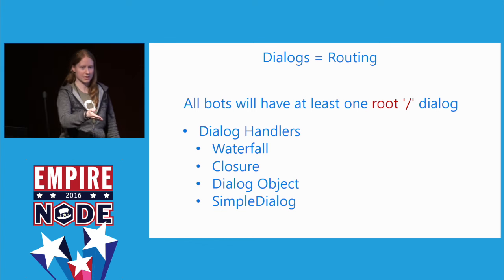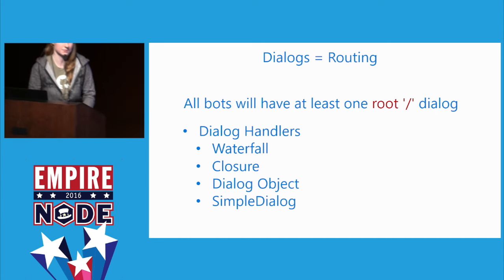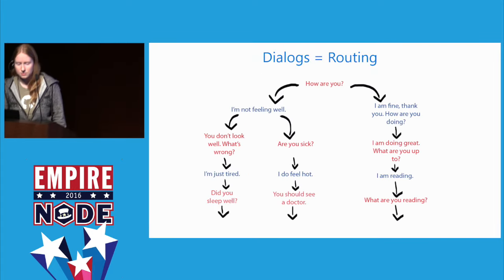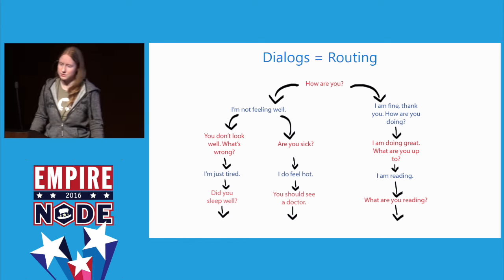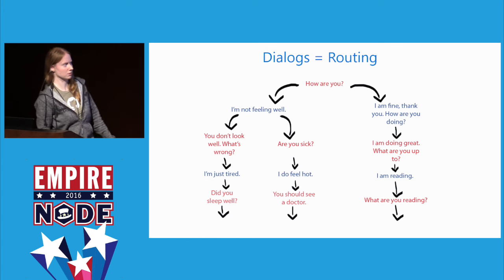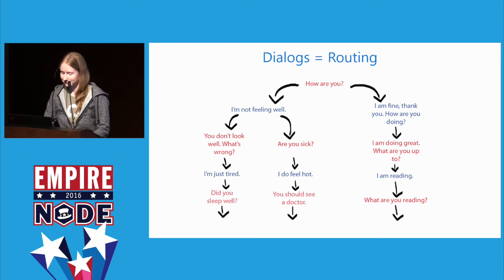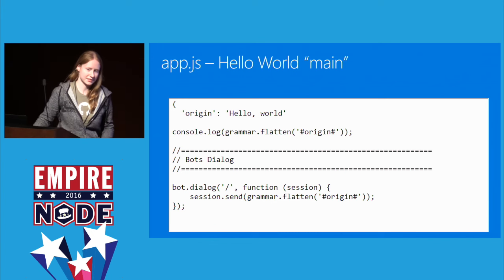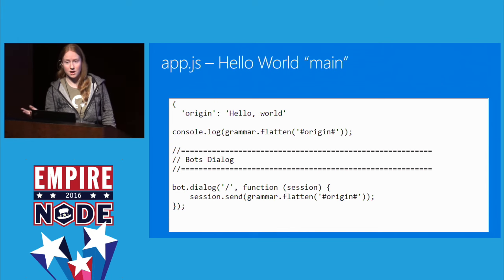All bots have at least one root slash dialogue. The root slash dialogue means that no matter what happens, it is triggered to say something. You can create different routes like slash greetings — 'How are you? I'm not feeling well' or 'I'm fine, thank you.' You can create more and more routes following the arrows: 'You don't look well, what's wrong?' or 'I'm doing great, what are you up to?' The tracery bot I built just spits out corporate jargon — it's triggered based on everything you say, similar to the echo bot.